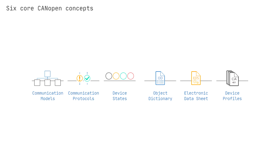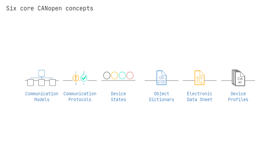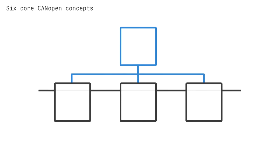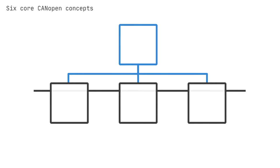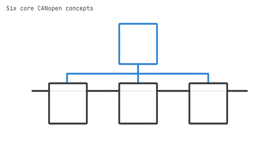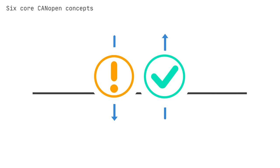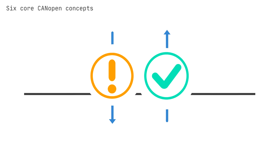Even if you are familiar with CANbus and, for example, J1939, the CANopen protocol adds six new important concepts. Number one: communication models — there are three models for device or node communication: master-slave, client-server, and producer-consumer. Number two: communication protocols — protocols are used for communication, for example configuring nodes via SDOs, or transmitting real-time data via PDOs.